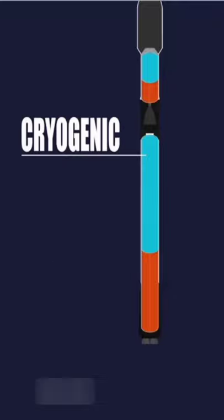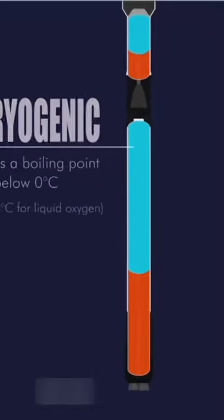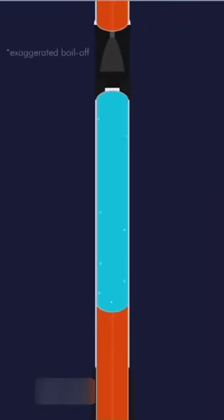Liquid oxygen is cryogenic, meaning that it has a boiling point far below zero, and since the tanks are not perfectly insulated, the liquid oxygen in fact starts to boil inside the tank.